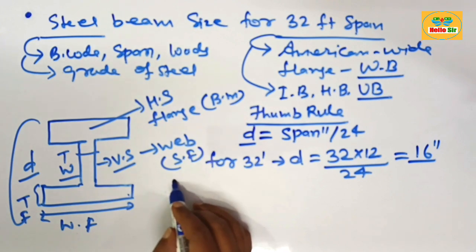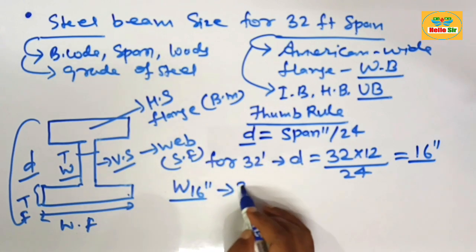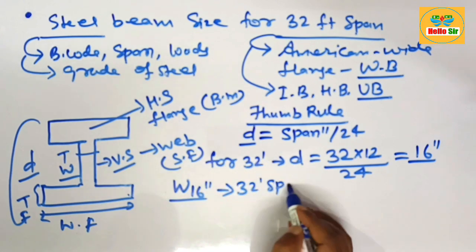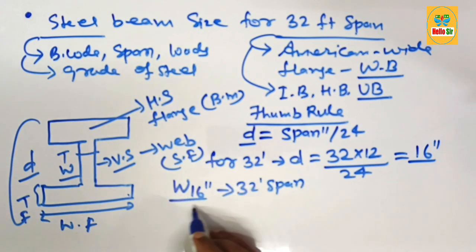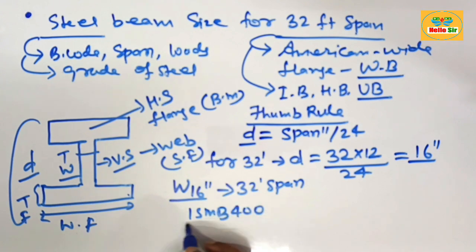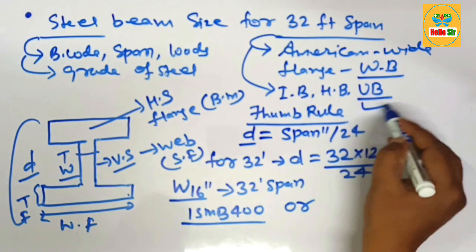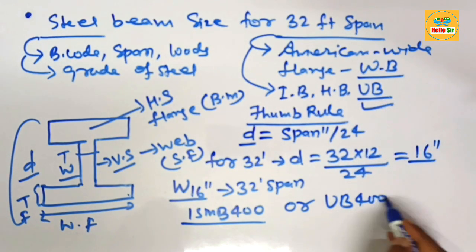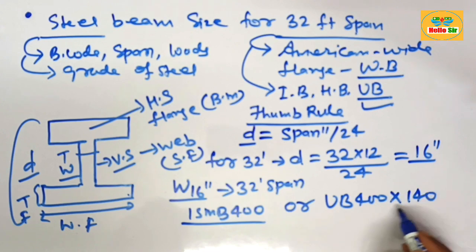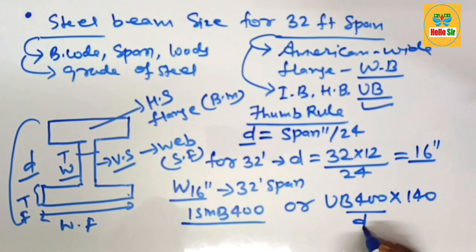As per another practice, you can use ISMB 400 beam for 32 foot span. If you calculate universal beam, UB 400 x 140 beam is required for 32 foot span.